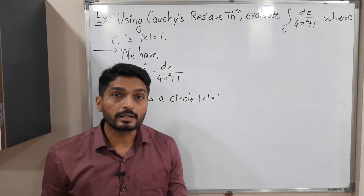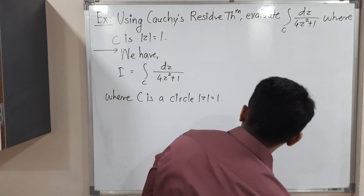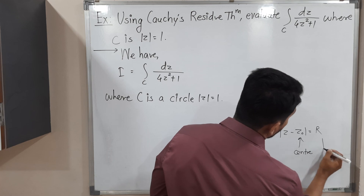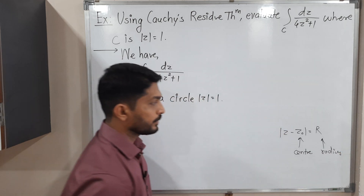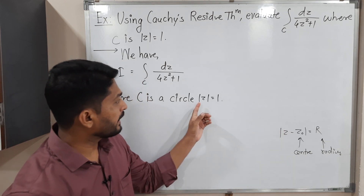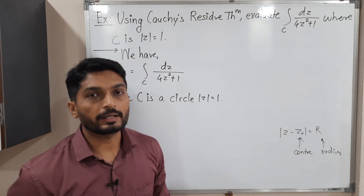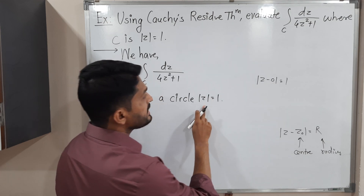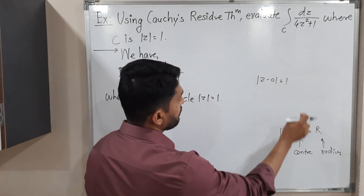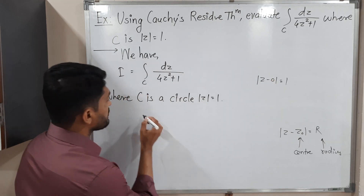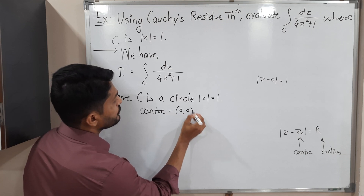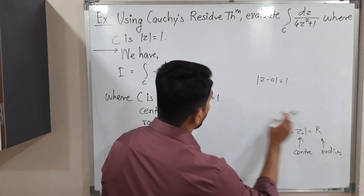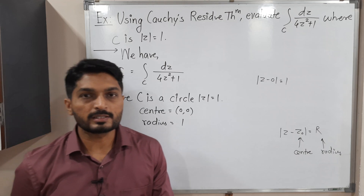To draw this circle, we need to know the center and radius. Let us compare this equation with the standard equation of a circle, which is mod(z minus z-naught) equals r, where z-naught is the center and r is the radius. Here we have just mod z, so z-naught is 0, meaning the center is (0, 0) and the radius is 1. So we have a unit circle.